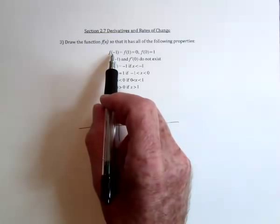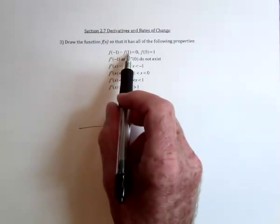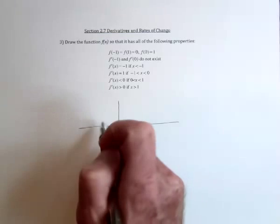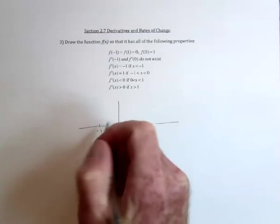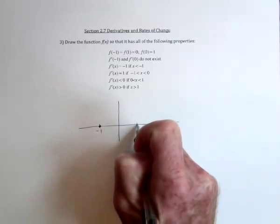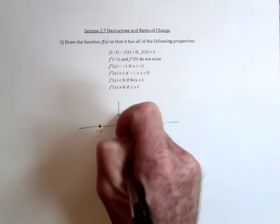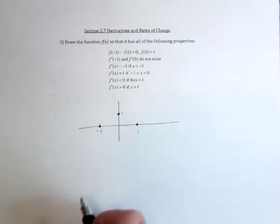First of all, this is just function information, just telling you when x equals negative 1 and when x equals 1, the y values are 0. So let's say over here is negative 1, over here is positive 1. That's where it hits the x-axis. And then it goes through 0 comma 1, so go up to a height of 1. That's another point.